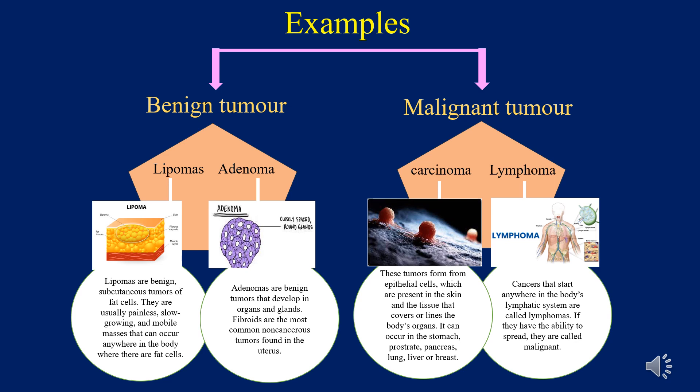For malignant tumors, carcinomas are tumors formed from epithelial cells, which are present in the skin and the tissue that covers or lines the body's organs. Carcinoma can occur in the stomach, prostate, pancreas, lung, liver, colon, or breast. They are a common type of malignant tumor.